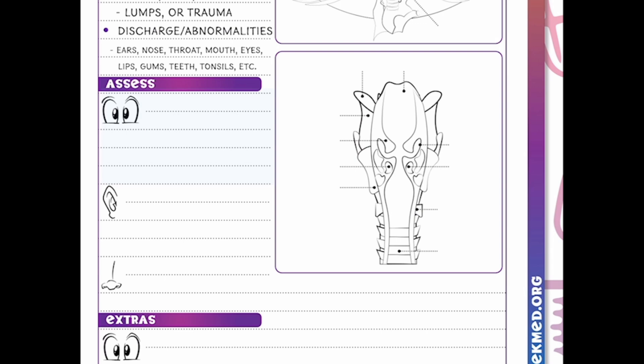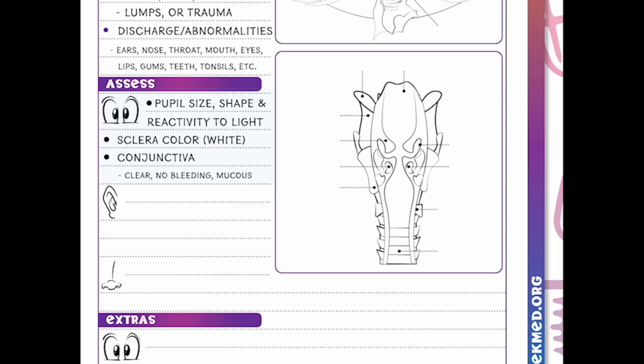After inspecting, we're going to assess the eyes — looking at pupil size, shape, and reactivity to light. We want to make sure the sclera looks a beautiful white color. The conjunctiva is the lining of the eye — this is usually clear with no bleeding and no mucus present.